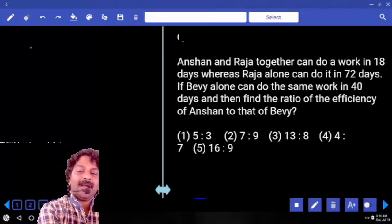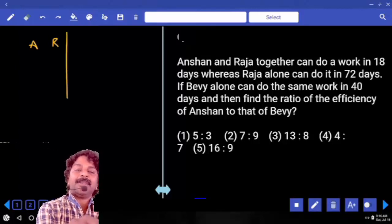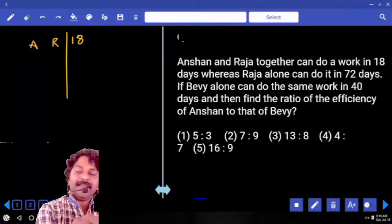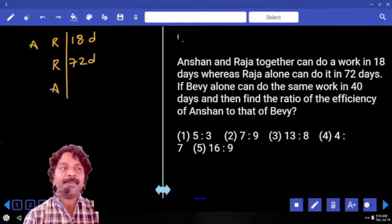So first of all, Anshan and Raja, they both can complete the work in 18 days. Raja alone can complete the work in 72 days. Using this, can we calculate how many days that Anshan can complete the work alone?